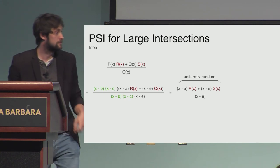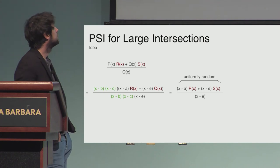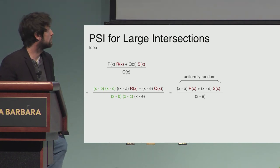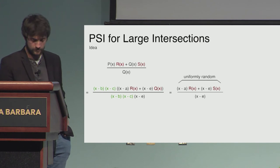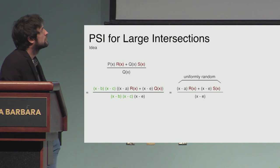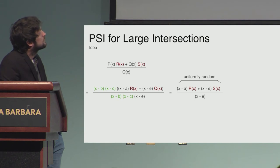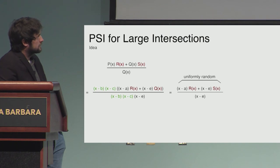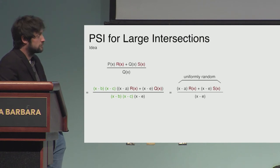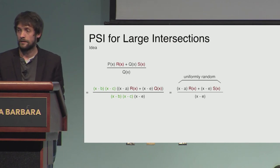Question: On that slide, the numerator is randomized but the denominator is deterministic. What prevents computing the GCD between numerator and denominator to remove the second term and recover the first? Answer: This won't work because the numerator is constructed by multiplying by r and s and adding them together — the GCD will not reveal anything; the result looks uniformly random.